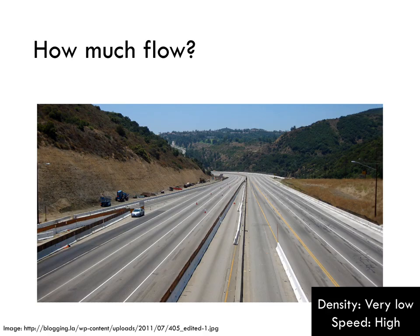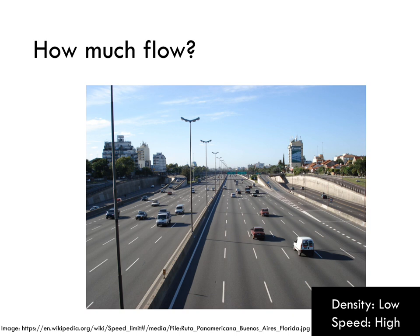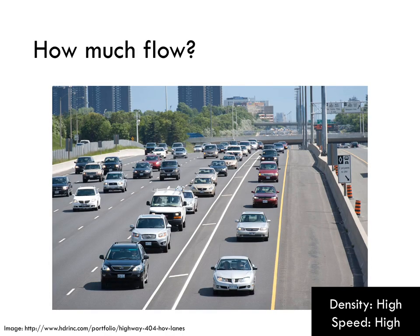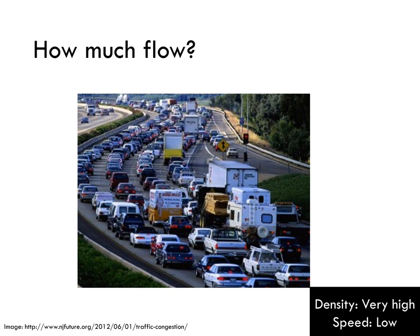This is the 405 during Carmageddon. In this photo, the 405 has very low density, and someone could drive very fast, but flow is pretty low. Here, we still have pretty low density and drivers are still able to maintain a high speed, and flow is higher still. Here, density is high and speeds are high — which lane do you think has the highest flow? In this photo, density is so high that drivers have to slow down to a crawl, and flow here is very low.